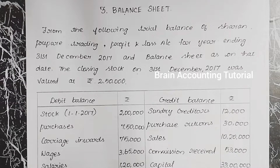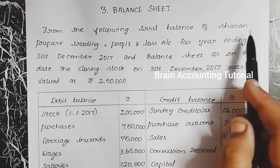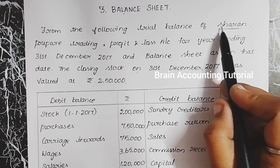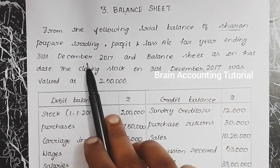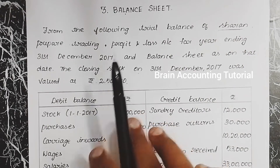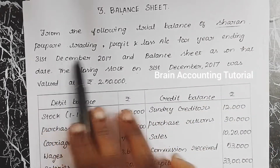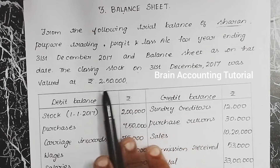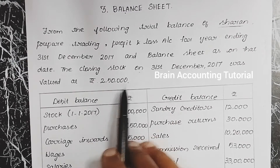Now we will analyze the first question. From the following trial balance of Sharon — Sharon is the dealer's name. We will prepare the balance sheet for Sharon. In this video, 2,50,000 is the closing stock.